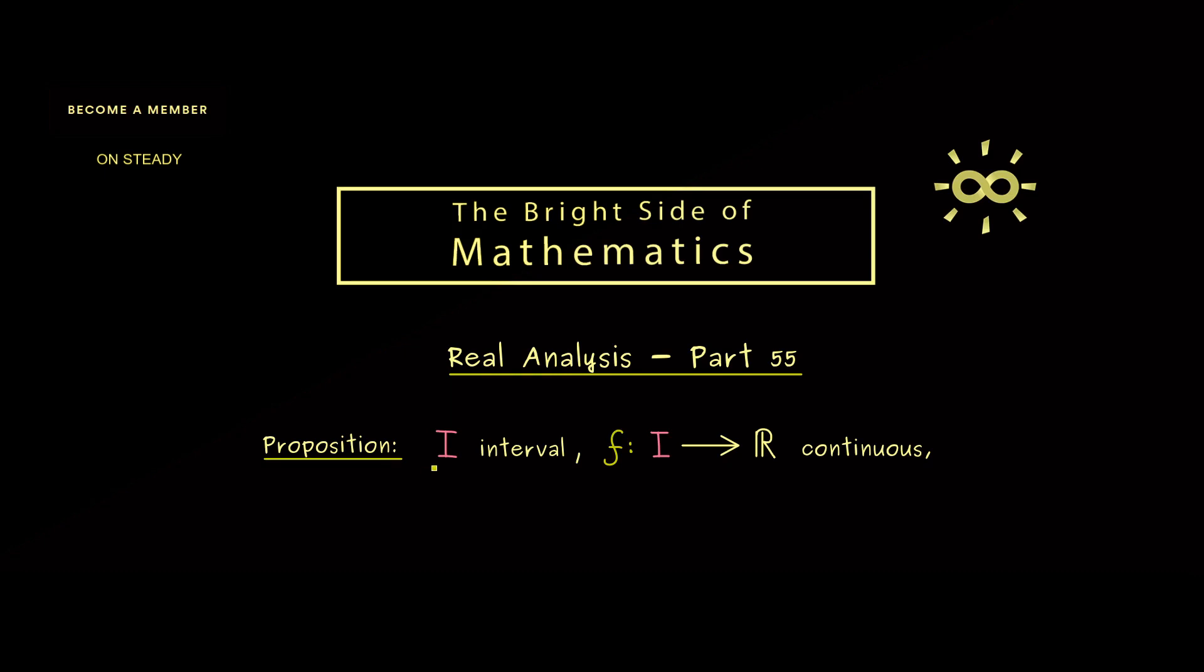Now the overall assumptions we need are the same as last time. We have an interval I and f is defined on this interval and a continuous function. Now we know such a function f has an antiderivative, and usually we call it capital F.